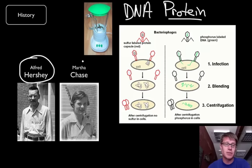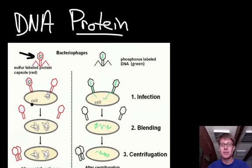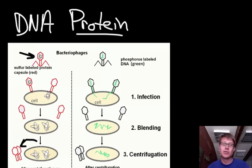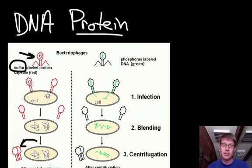The Hershey-Chase experiment, sometimes called the blender experiment, used bacteriophages — simply a virus that infects a bacteria. It looks kind of like a lunar lander: it lands on the bacteria, injects its hereditary material in, and then hijacks that bacteria to make more of the bacteriophage. What Hershey and Chase did — a really elegant experiment — is they used two different atoms. In one experiment they used sulfur, labeled red, to dye the bacteriophages, and then infected the bacteria, blended it all up, and precipitated it out to see what color came out.